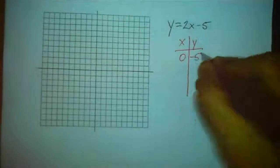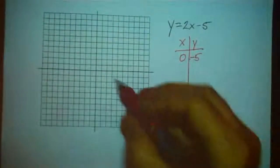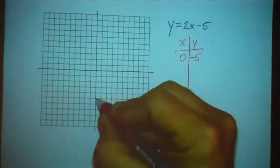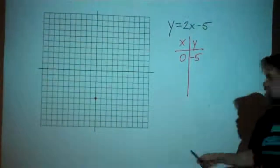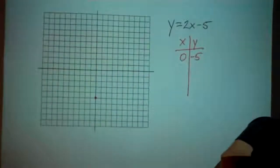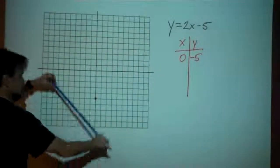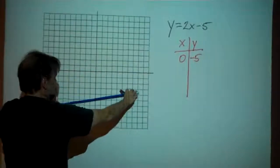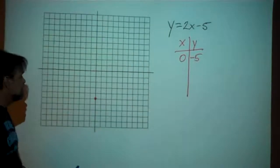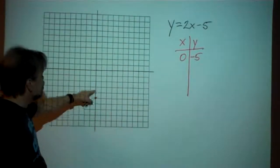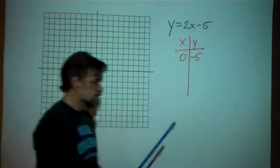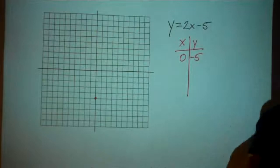So that turns out to be the point (0, -5). Let me go ahead and plot this point right here. Our line is going to go through that point — I know it's going to cross the y-axis right there. This point where it crosses the y-axis is known as the y-intercept.